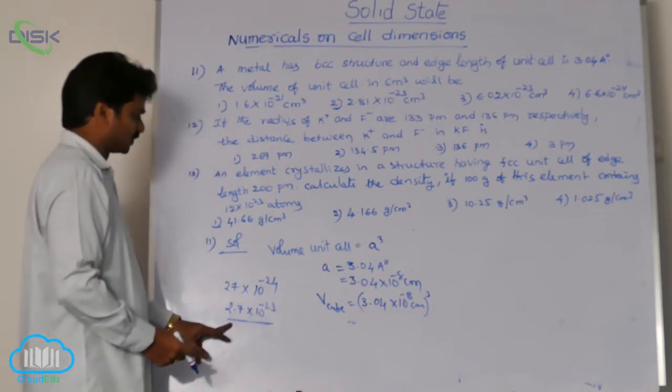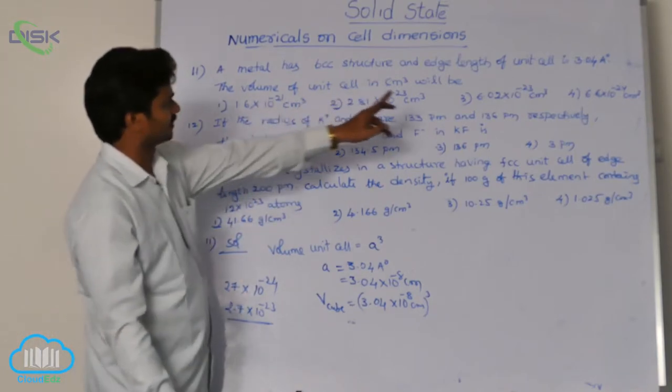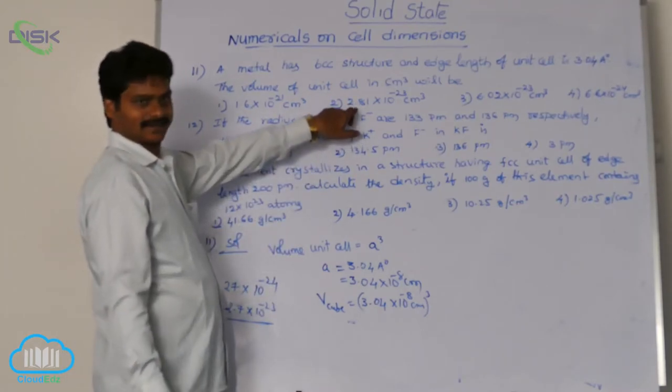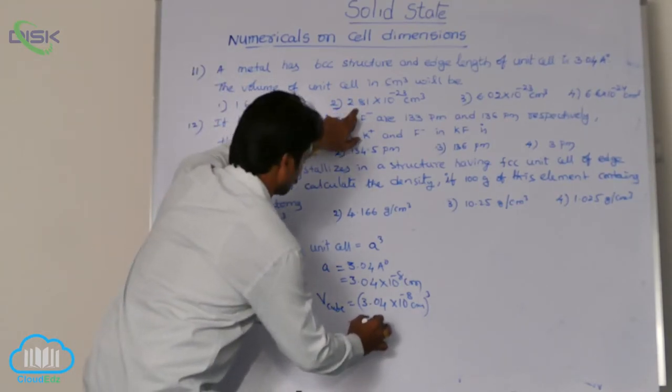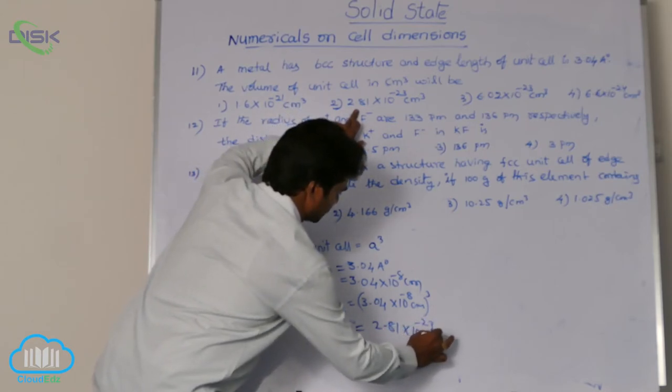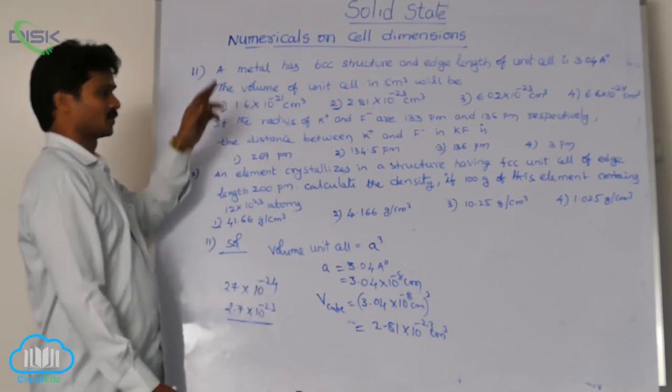Check the value which is nearer to this 2.7 into 10 power minus 23. See these values all. Which option lies nearly to this value? This one. So, answer is 2.81 into 10 power minus 23 centimeter cube. So, this is the solution for question number level.